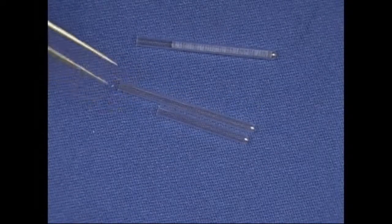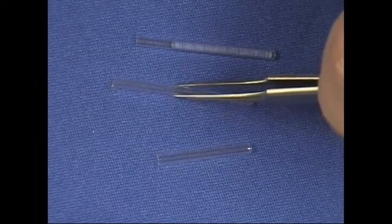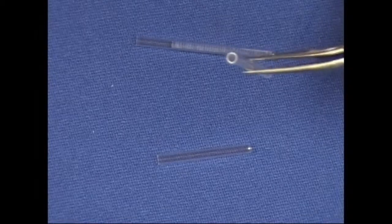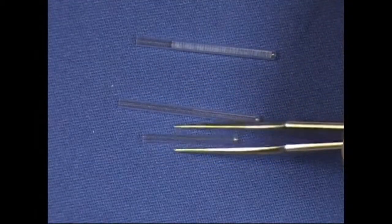Now on the pyroprobe autosampler, when the sample is loaded into the autosampler, it actually sits vertically, whereas the quartz tube in the manual pyroprobe sits horizontally.